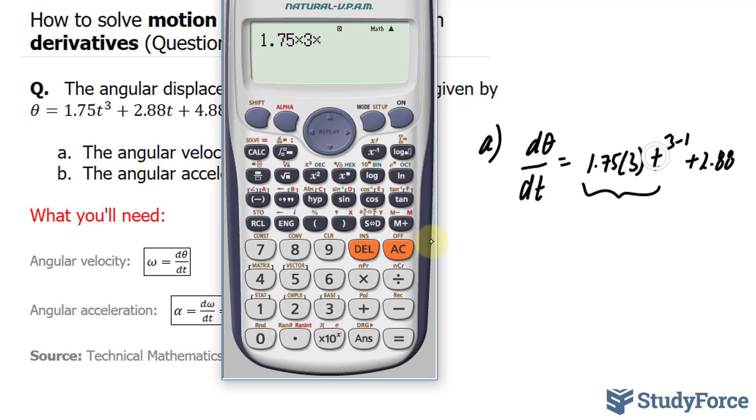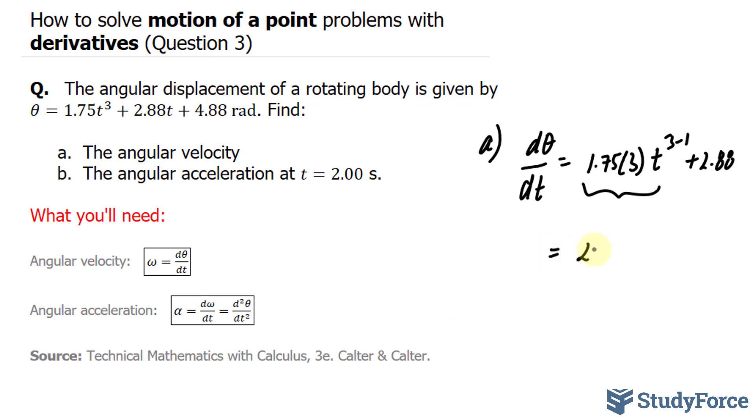and I'm going to place 2 in here. 2 to the power of 2 is 4, plus 2.88. This gives me an angular velocity of 23.88 radians per second.